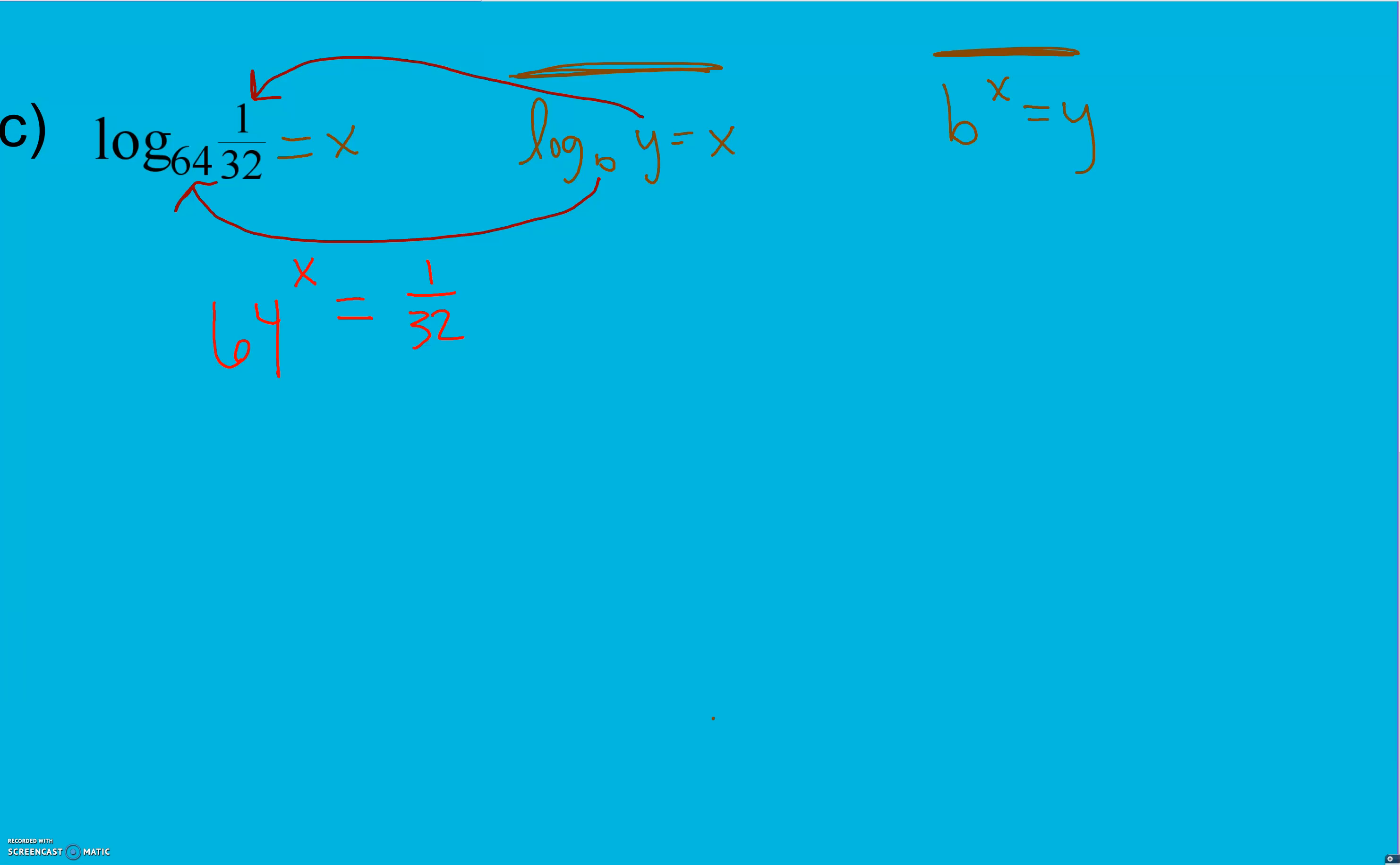And we have to try and get these down to the same base. So I'm going to break 64 down, 8 times 8, using our factor tree, get it all the way down to its prime factorization. We've done 64 a few times. So some of you might already know that it's 2 to the 6th power.